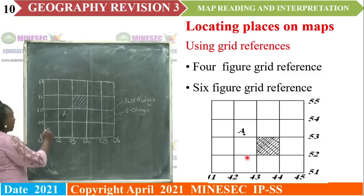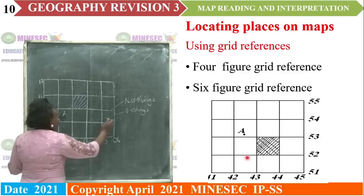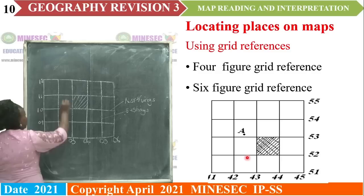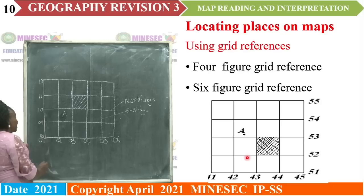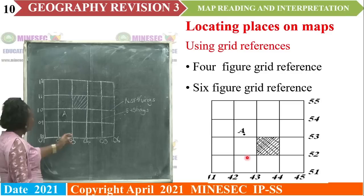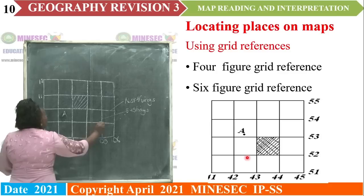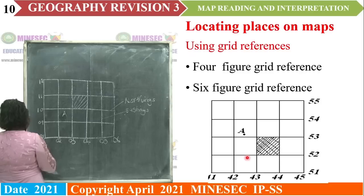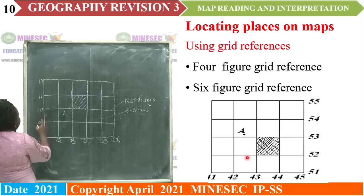The eastings are the vertical lines. We call them eastings because their values are increasing towards the east — we have 01, 02, right up to 06. The northings are the horizontal lines, and their values are increasing northwards: 08, 09, 10, right up to 12.